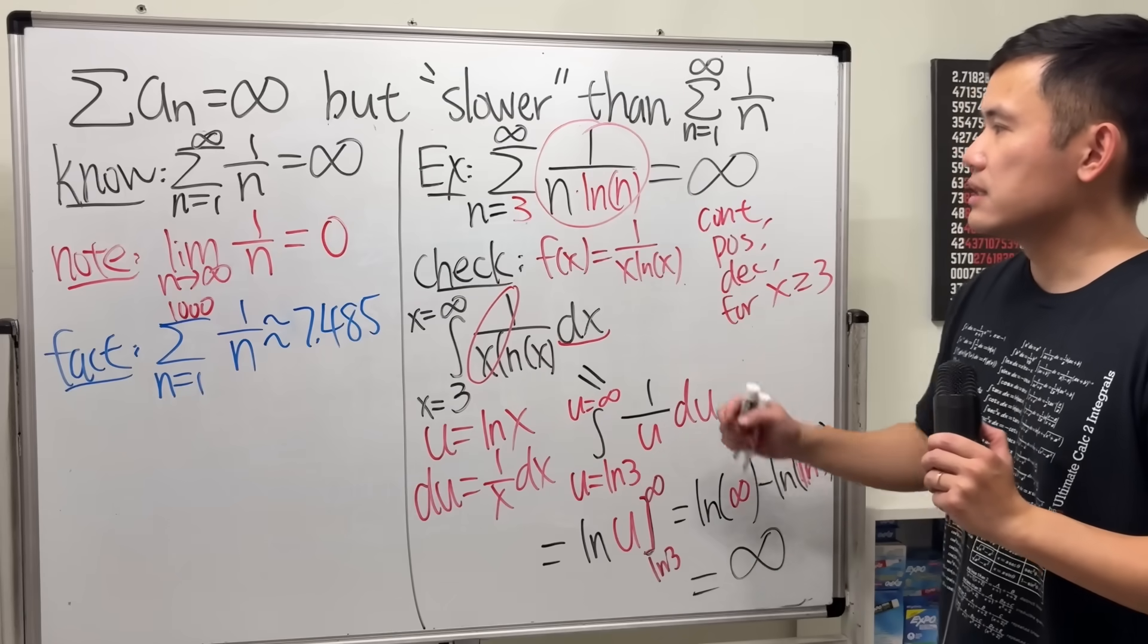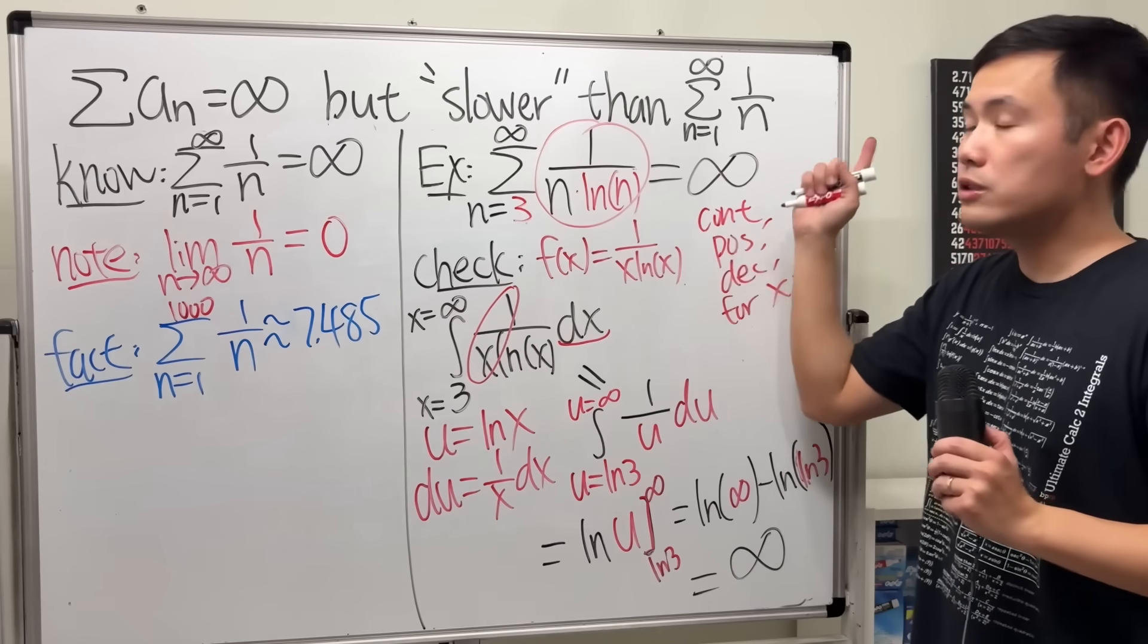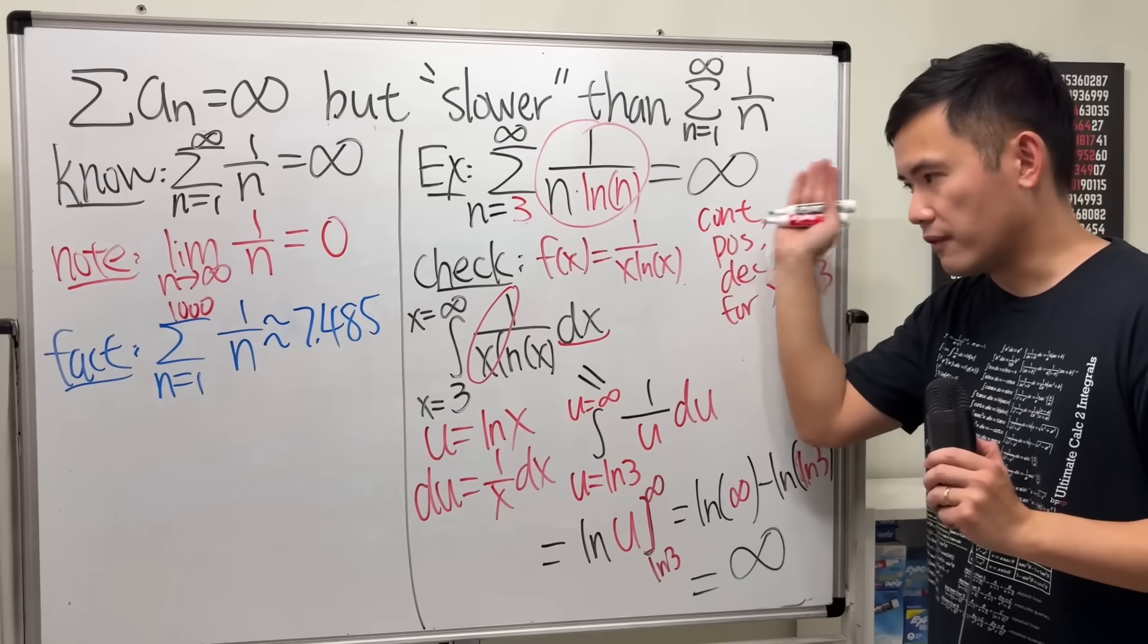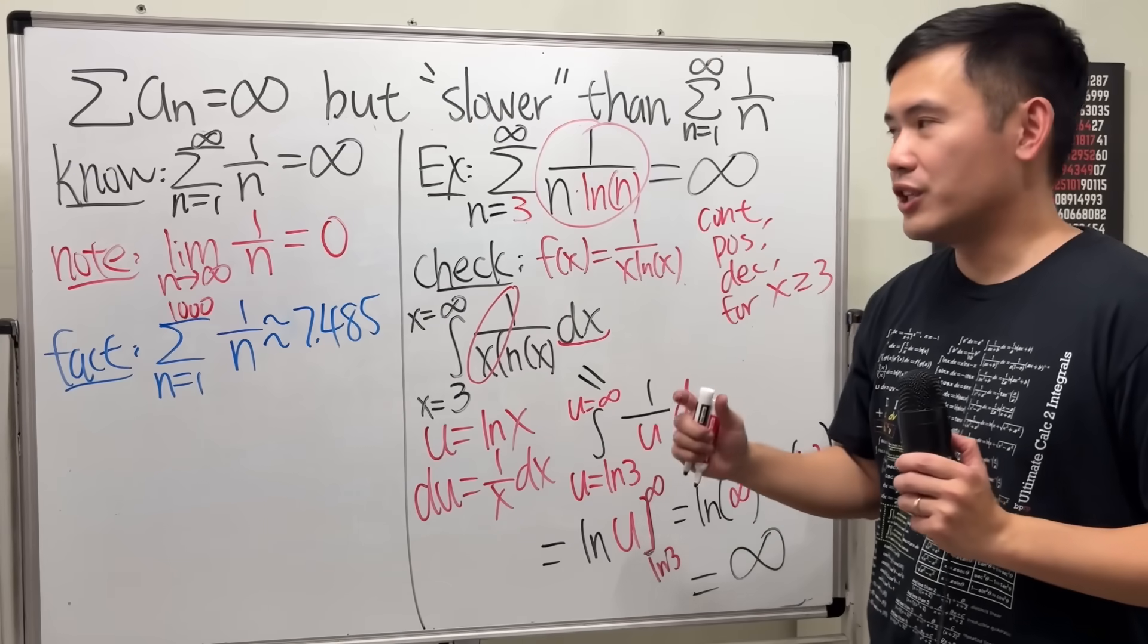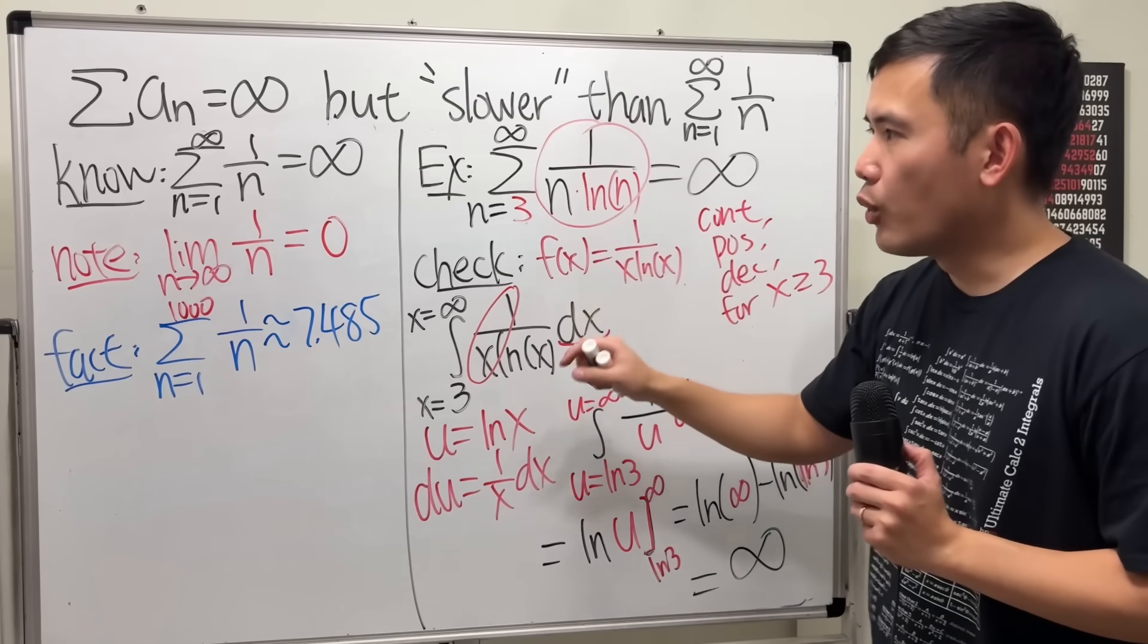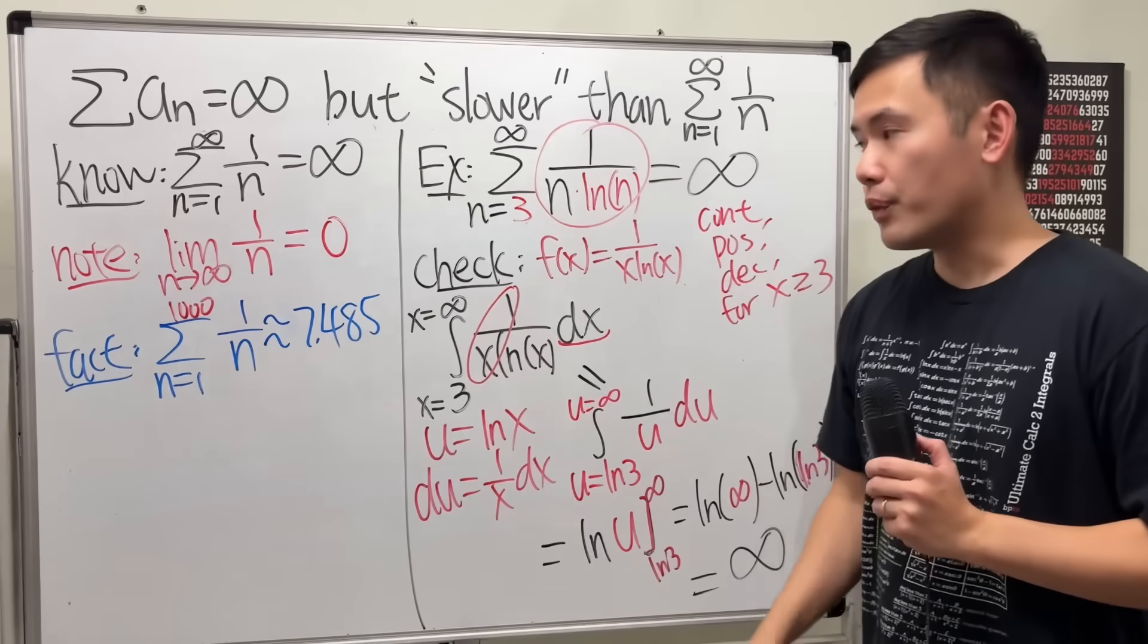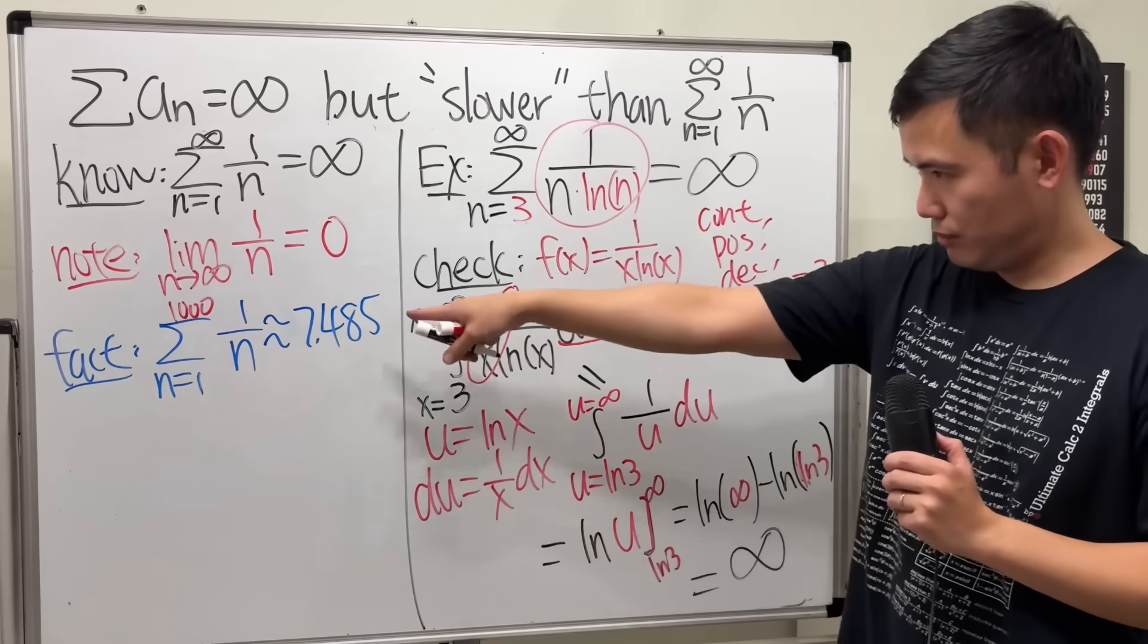So by the integral test, we will know that this right here also diverges to infinity. Now, for the rest, we just have to check that this does go to infinity slower than that. Well, how do we do that?